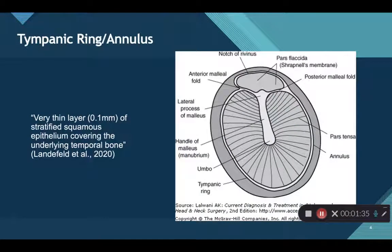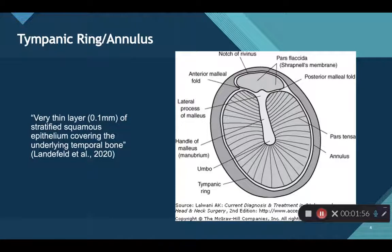The tympanic ring, or tympanic annulus, is found on the outer portion surrounding the tympanic membrane. It's a bony anchor for the tympanic membrane and is covered in a very thin layer of stratified squamous epithelium. This separates the tympanic ring from the temporal bone, and because this layer is so thin, it allows the exostosis to break through and enter into the auditory canal.